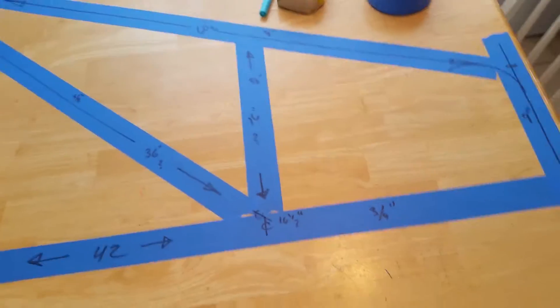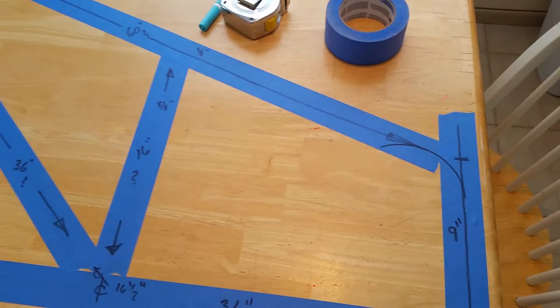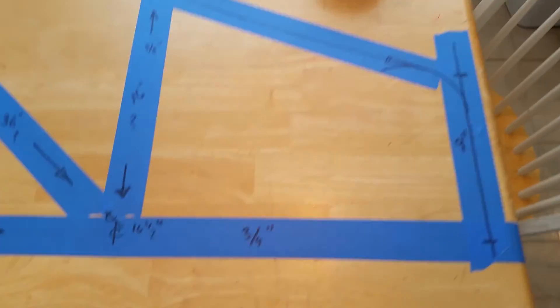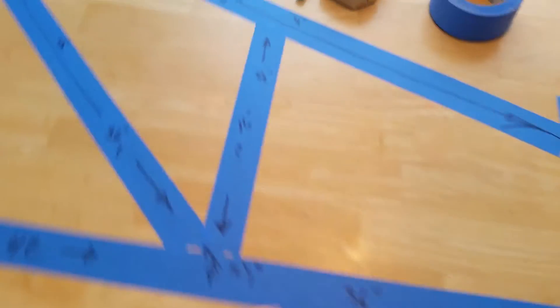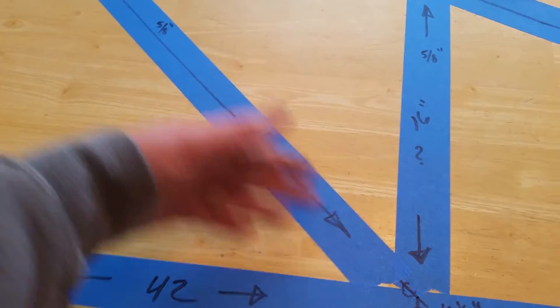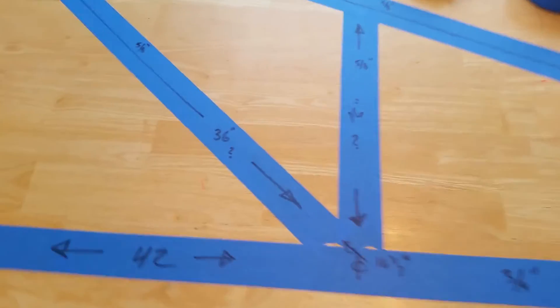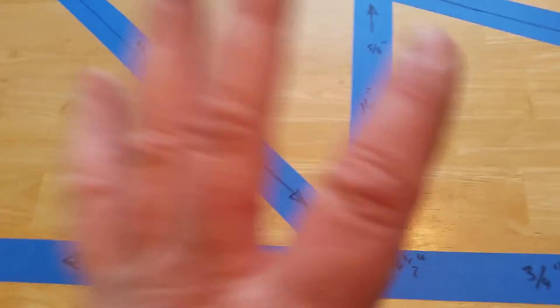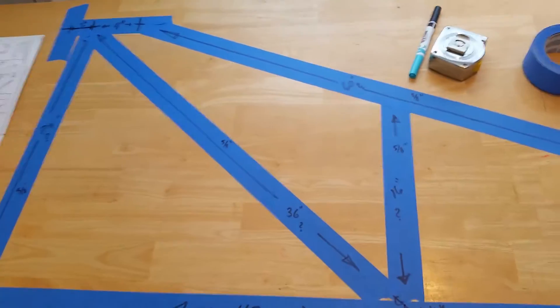You can see I laid out the pipe sizes. I put question marks here saying, you know, 36 inches, probably get a four-footer. It's two bucks a foot, get an extra foot, and maximize all these parts.